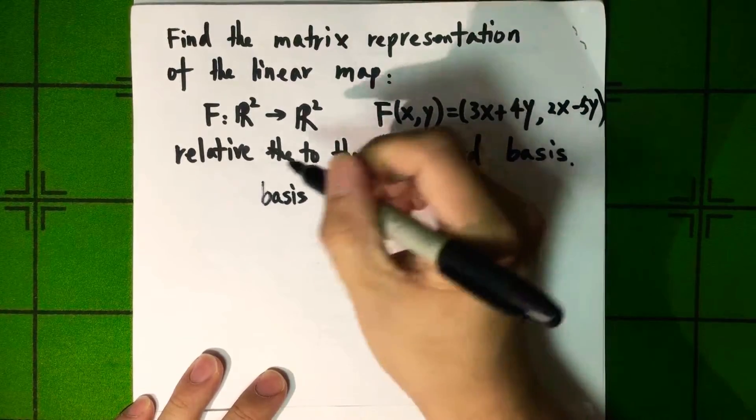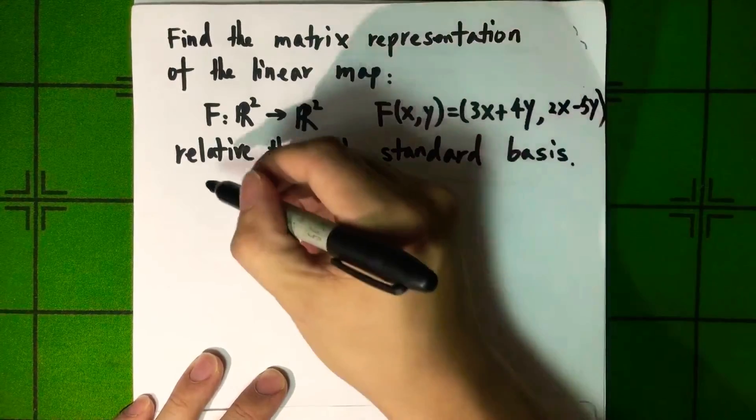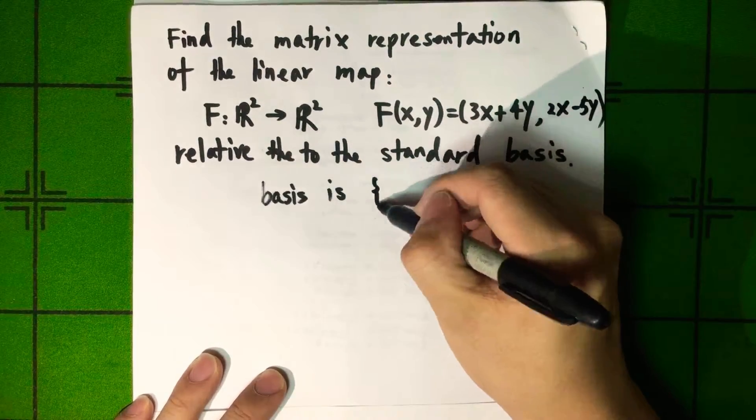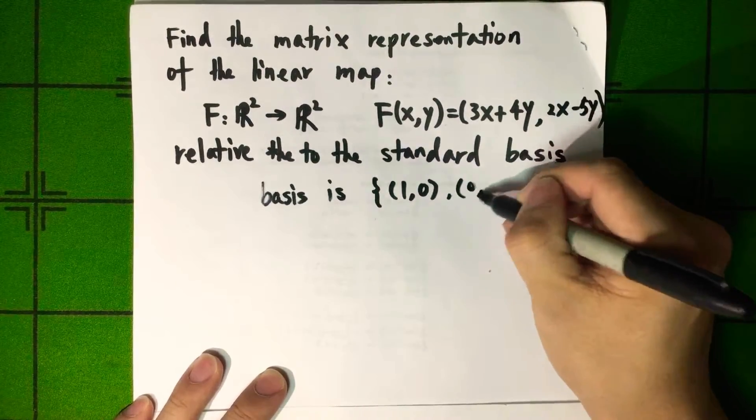So the standard basis for R2 is the set of two vectors: (1, 0) and (0, 1).